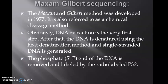So the first one is Maxam-Gilbert sequencing method. The Maxam and Gilbert method was developed in 1977. It is also referred to as a chemical cleavage method. DNA extraction is the very first step. After that the DNA is denatured using the heat denaturation method and single-stranded DNA is generated.